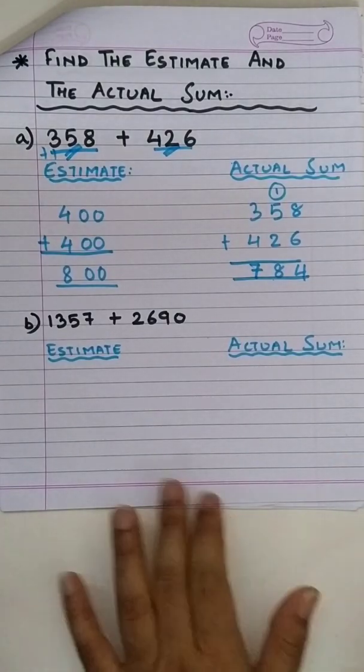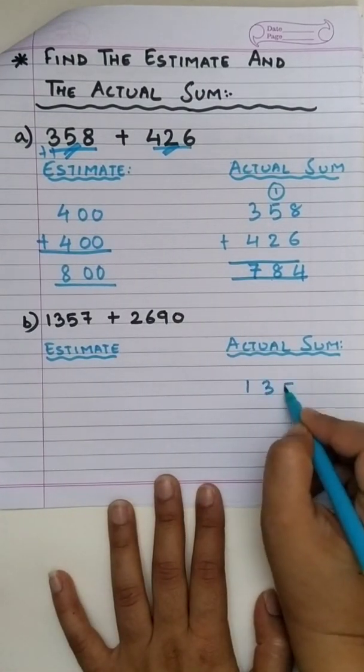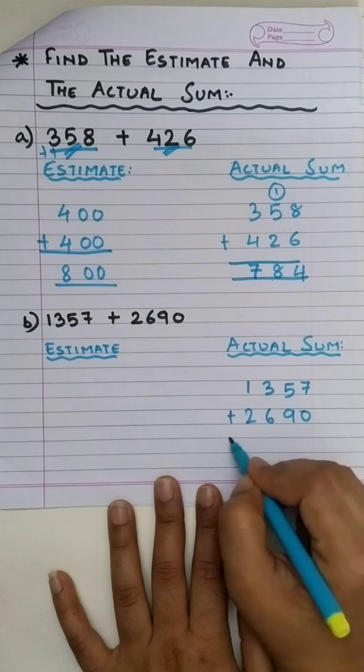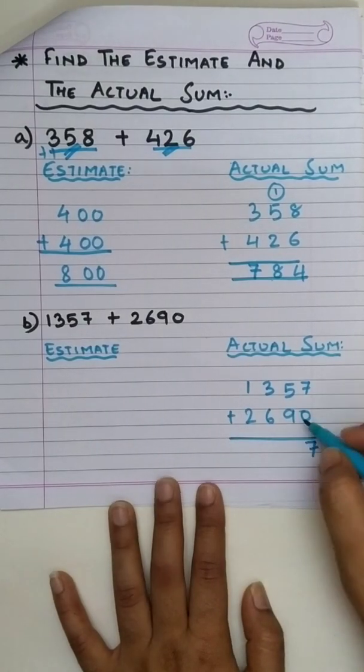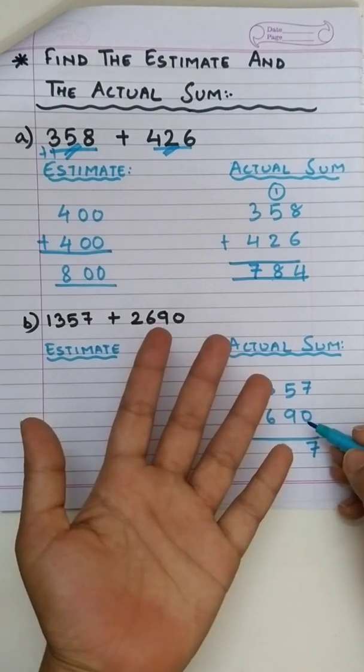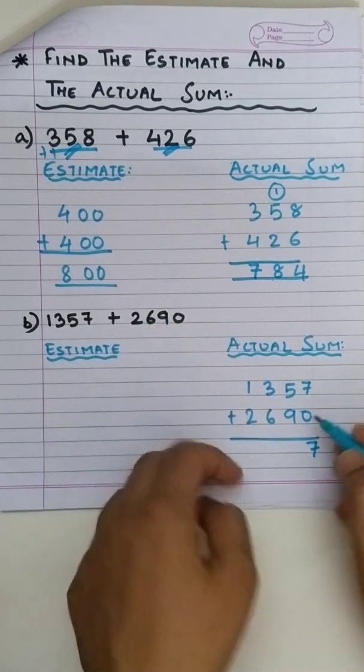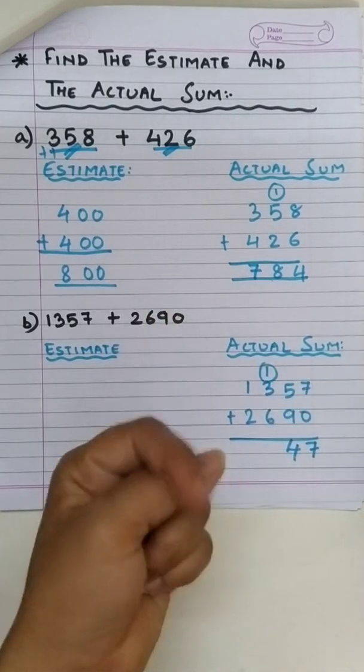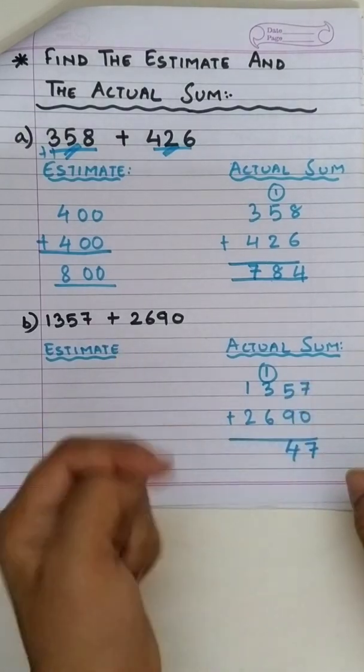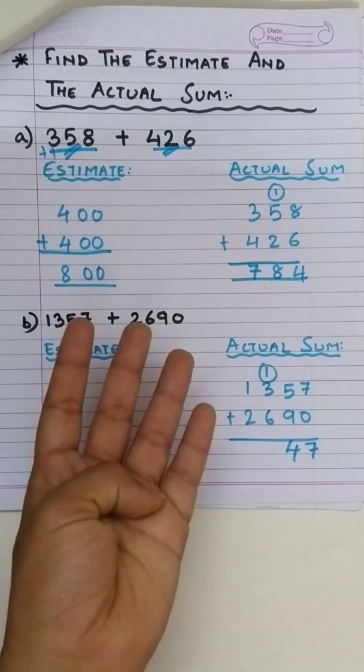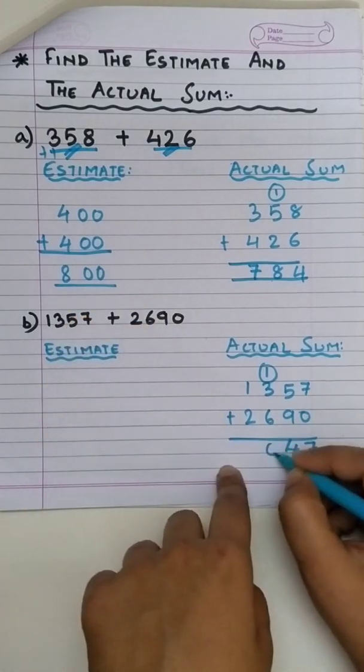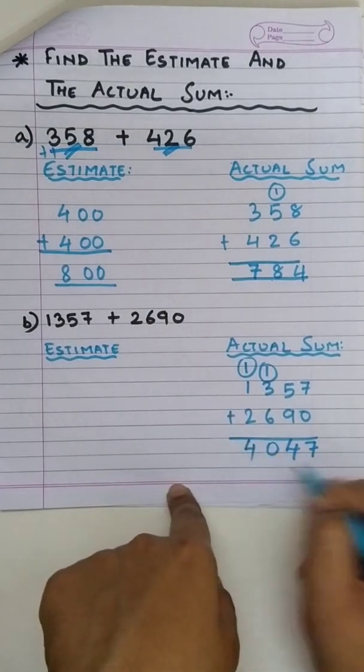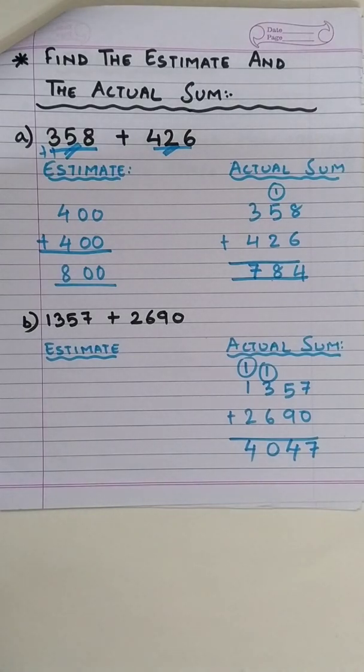Let's try one more. The actual sum of 1357 and 2690 will be 7 plus 0, 7, 9 in mind, 5 on finger, after 9, 10, 11, 12, 13, 14. Always bigger number on mind. Okay! 3 plus 1 will be 4 and 6 plus 4. So, 6 in mind, 4 on finger, after 6, 7, 8, 9, 10. So, 0 here, 1 up, 1 plus 1 is 2, when 2 plus 2 is 4. So, the actual answer is 4047.